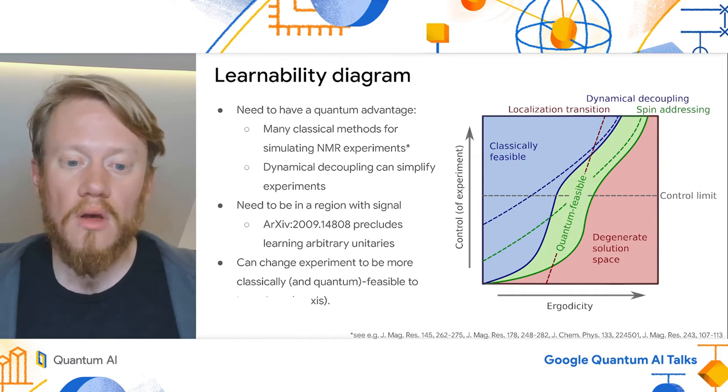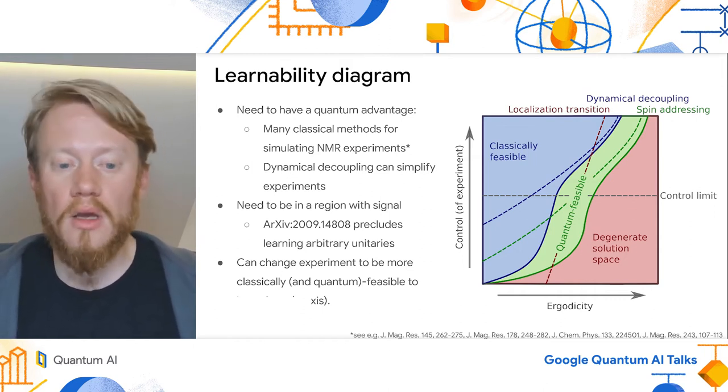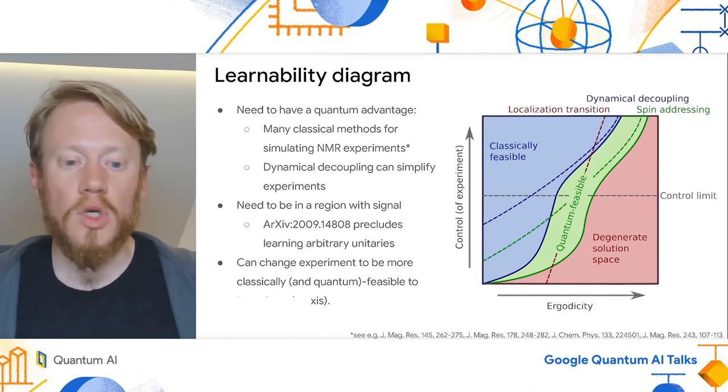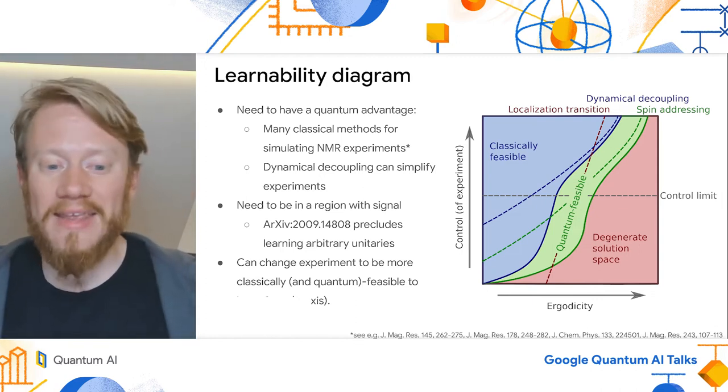Tools like magic angle spinning or decoupling and recoupling pulse sequences are able to turn off the dipolar coupling terms even in solid-state systems, leaving the system weakly correlated and classically tractable to simulate. In order for us to find a quantum advantage, we need to push into the strongly correlated regime where these methods don't work.